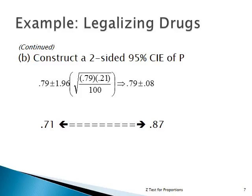Part B is to construct a two-sided 95% confidence interval estimator for the population proportion. The sample proportion 0.79 is in the middle, plus and minus the margin of error, which is 0.08. We end up with an interval from 0.71 to 0.87. We have 95% confidence that this interval contains the true population proportion of people in favor of legalizing drugs.